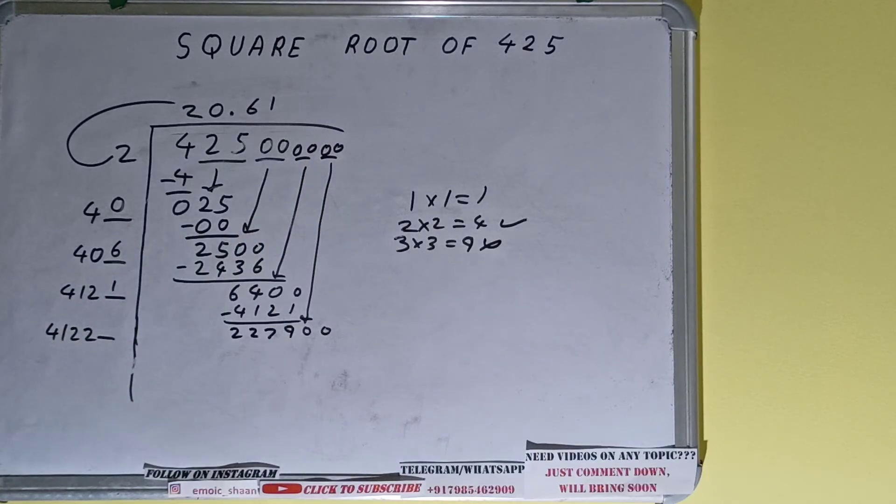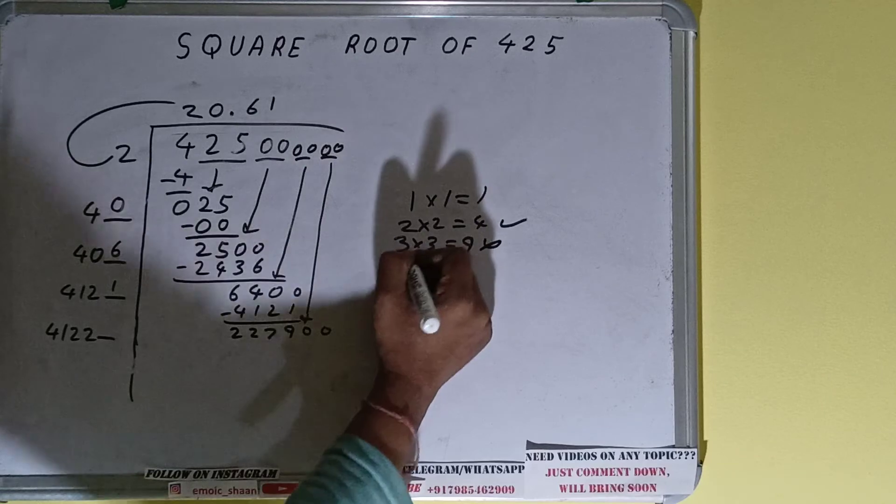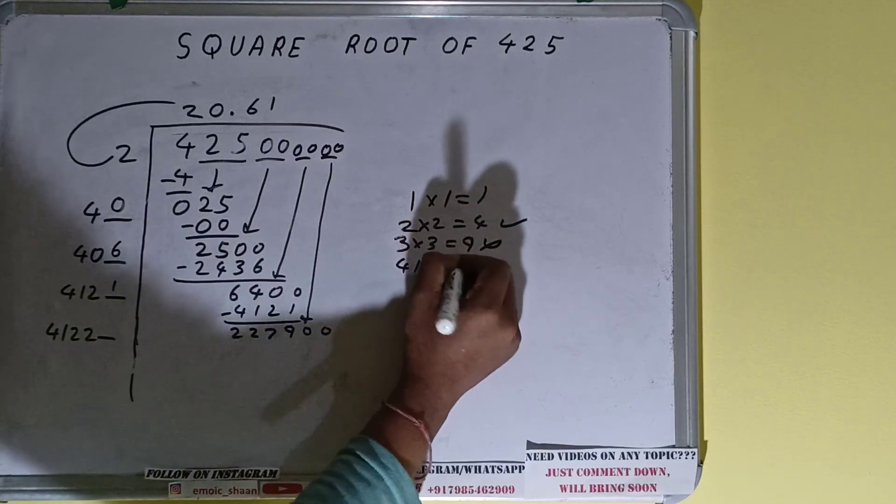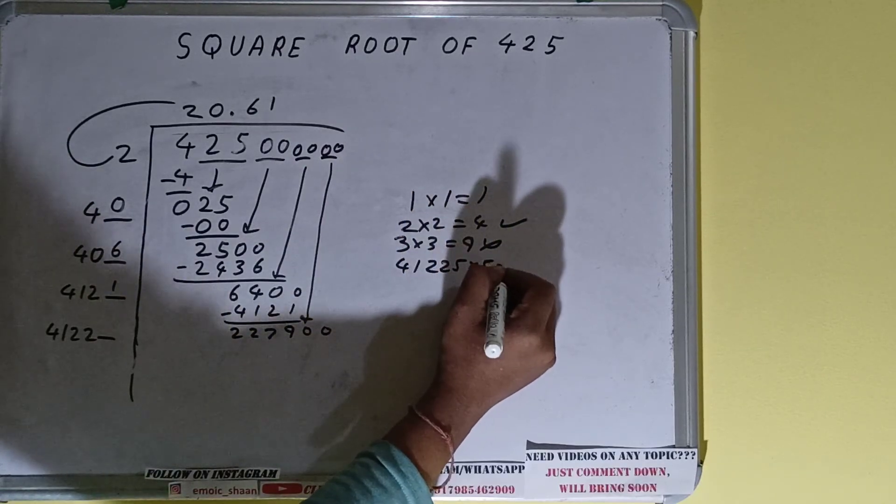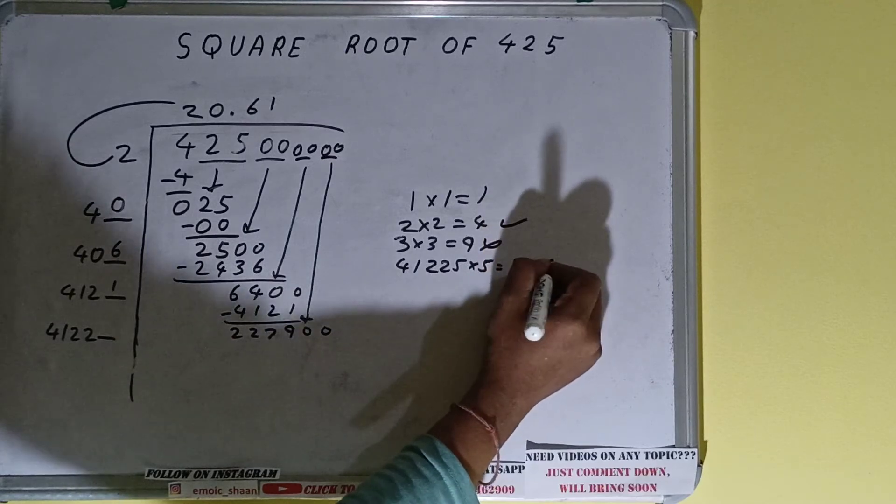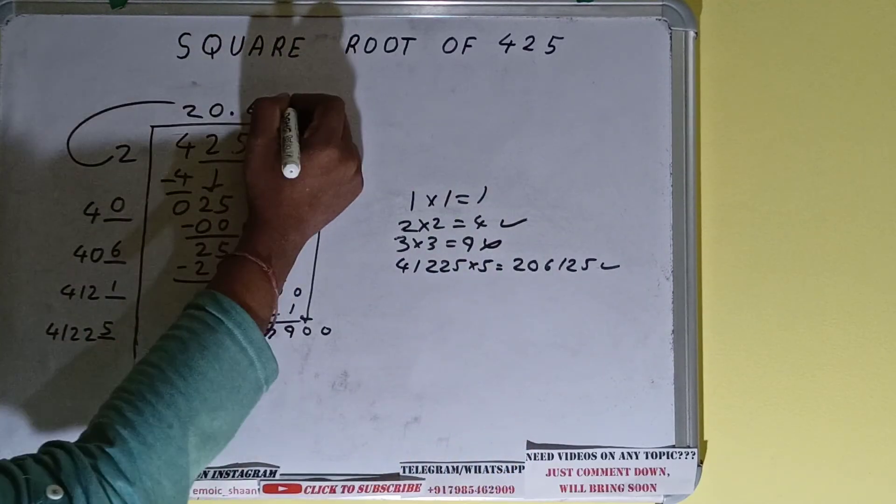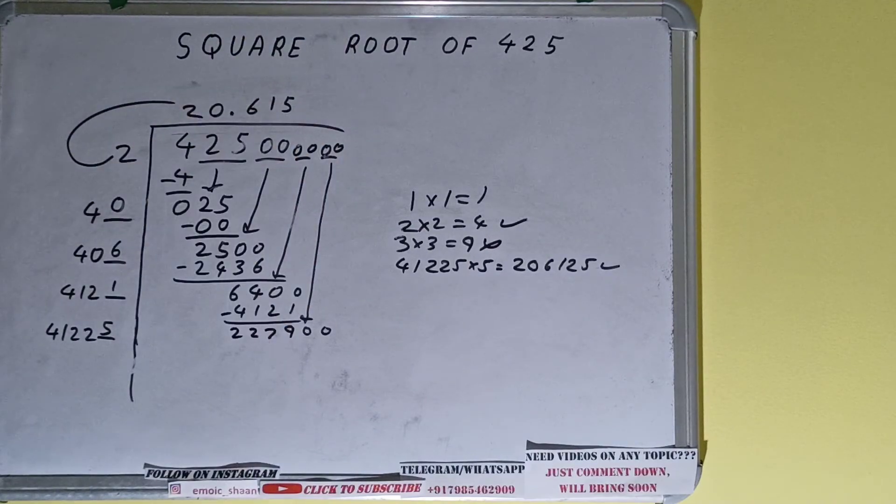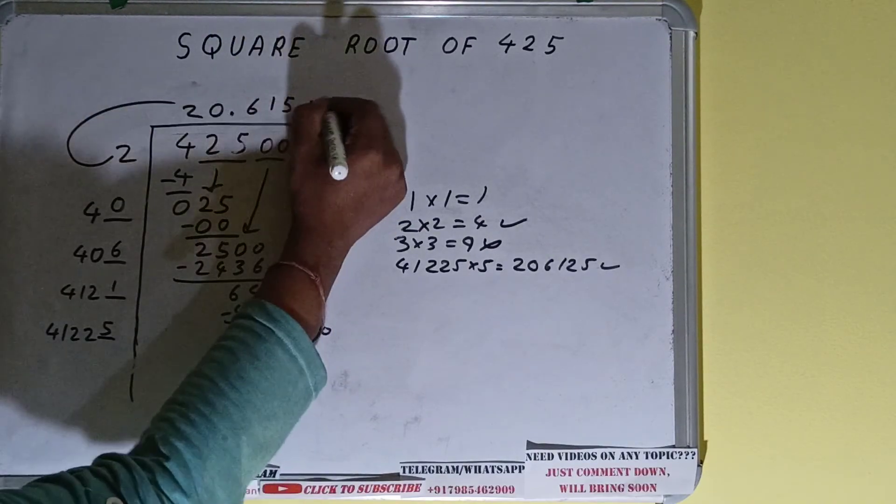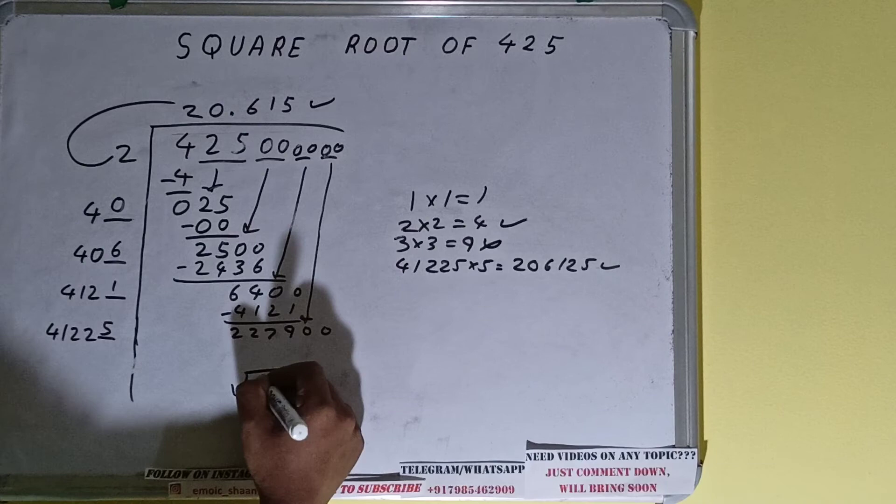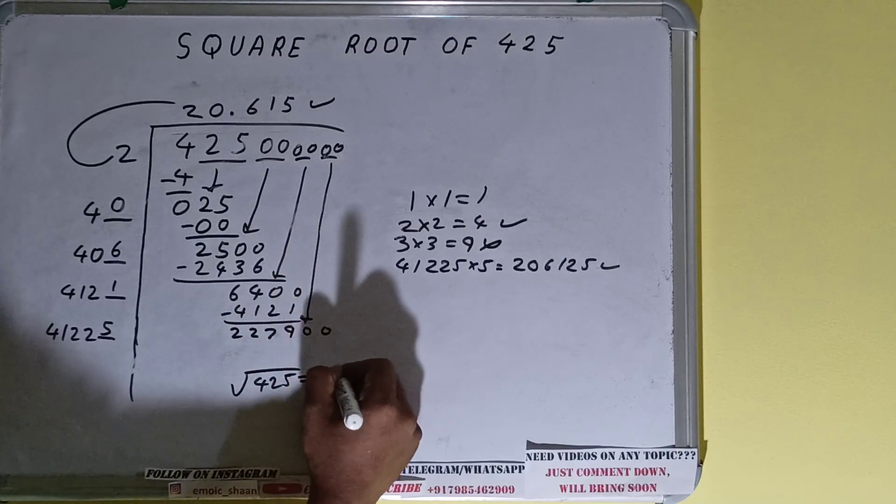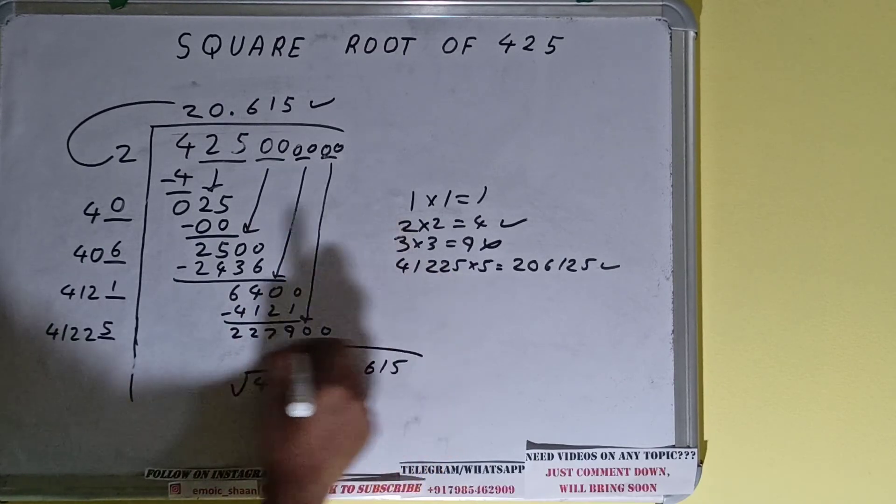Now we can try 5 times. So 41225 into 5 will be 206125, which is good to use - five here and five here. But we don't need to calculate further because we got the answer correct up to three decimal places. So the square root of 425 will be 20.615, and that will be the answer.